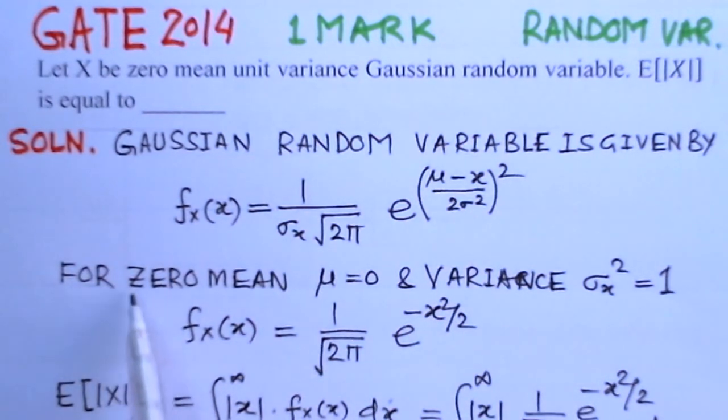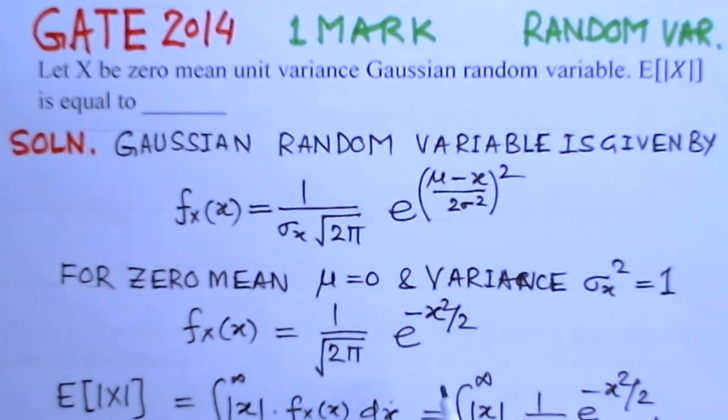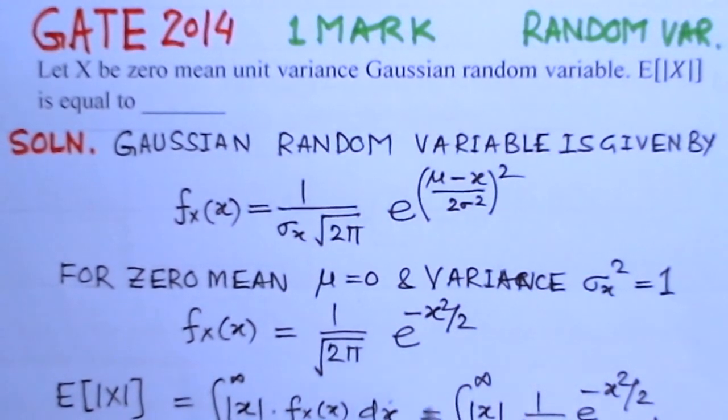So in this problem it is given that it is zero mean, that mu is 0, and variance sigma x squared is 1. It will be 1 because the variance is 1. So fx of x equals 1 over root 2 pi, e to the power minus x squared over 2.